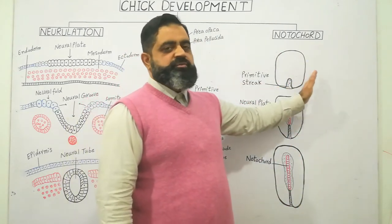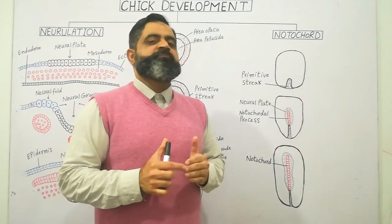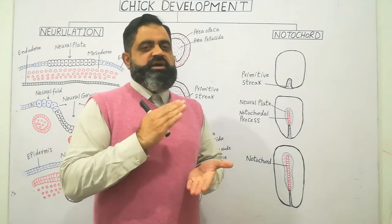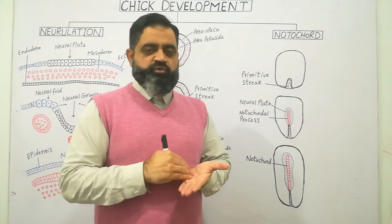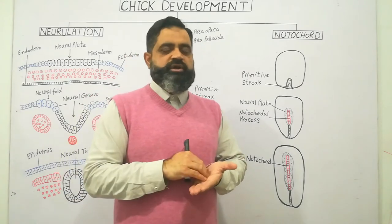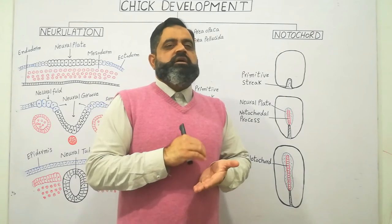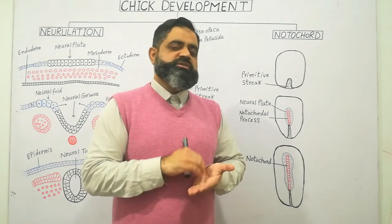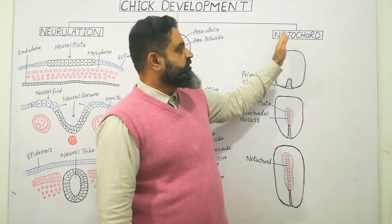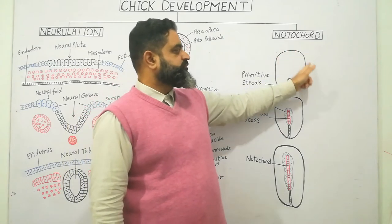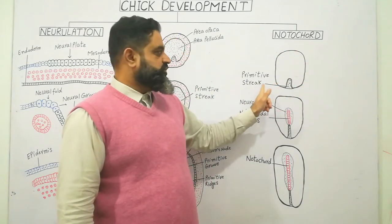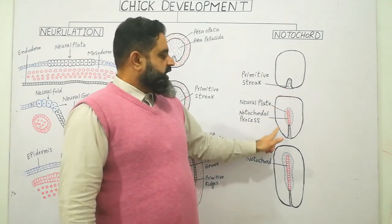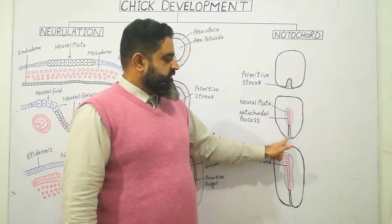Let's look at another diagram to discuss the formation of the notochord. As I already mentioned, cells from the epiblast are migrating inside the blastocoel between the epiblast and hypoblast, and they are going to form notochord and mesodermal cells. The formation of mesoderm I already discussed in my previous video, so today we are only going to discuss notochord formation. This is an embryo in the form of a disc present on the surface of the yolk, and this is the formation of the primitive streak at the posterior or caudal end of the embryo.